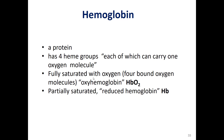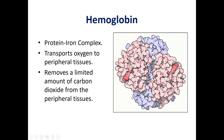If only part of these four sites — for example, three, two, or one — is attached to oxygen, we call this type partially saturated or reduced hemoglobin. Hemoglobin is a protein-iron complex that transports oxygen to peripheral tissues, removes a limited amount of carbon dioxide from peripheral tissues, and plays a role in controlling the pH of our blood.